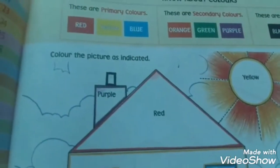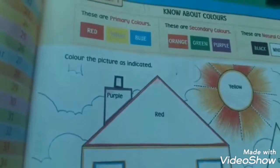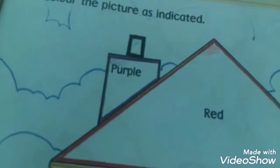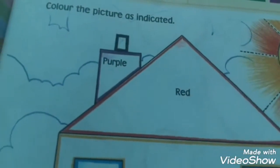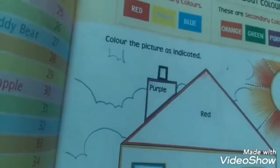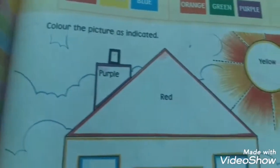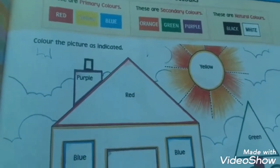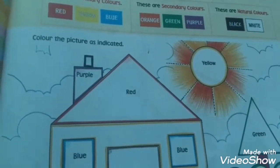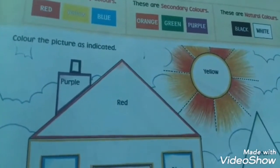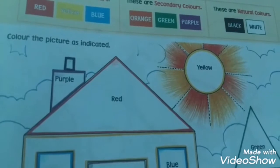There are three types of colors. Primary colors, we call them basic colors also. In secondary colors, there are orange, green, and purple. These colors you can make by yourself. But in natural colors, black and white.